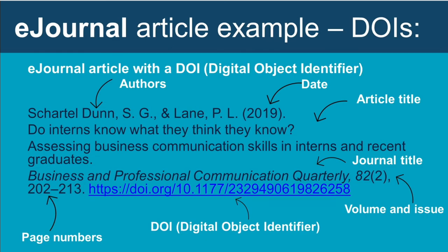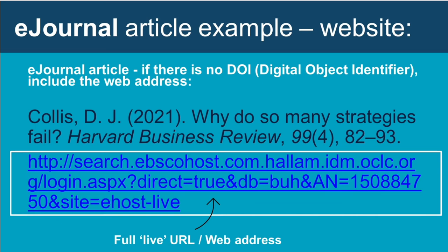For journal literature: a journal article with a DOI has two authors, a publication year, and an article title. The title of the journal — Business and Professional Communication Quarterly — and the volume number are in italics. Include an issue number in round brackets and the article's page numbers. For sources with two authors, use both authors' surnames in each citation. If the citation is inside brackets use an ampersand between the names, but if naming the authors in the text use 'and' instead.